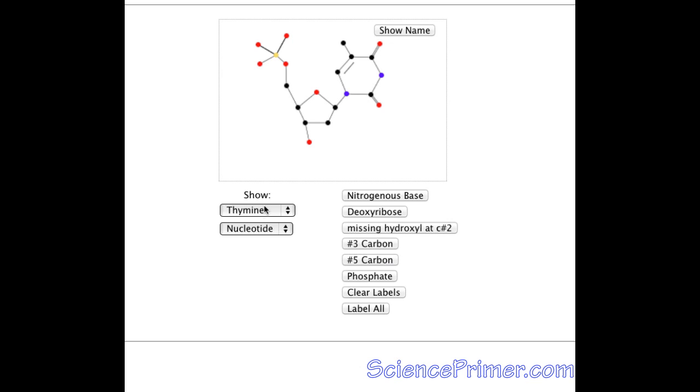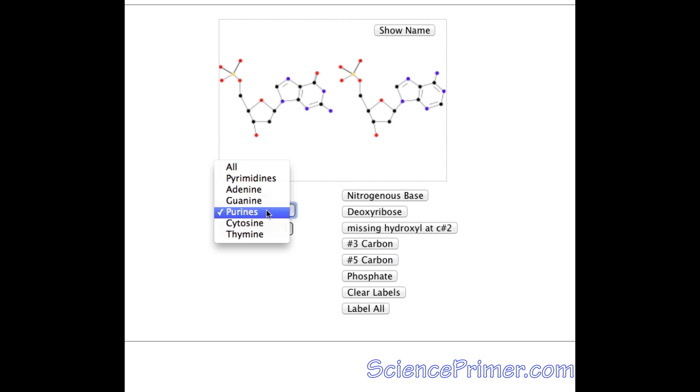There are two different classes of nucleotides in DNA: purines and pyrimidines. These can also be shown. Note the similarity in structure. Both purines have double rings. Both pyrimidines contain a single ring.